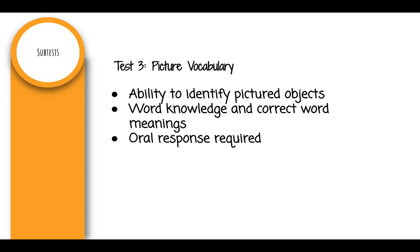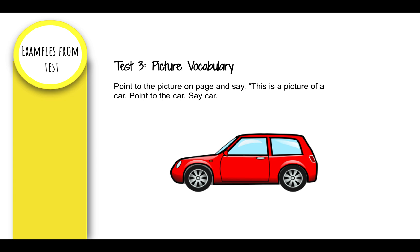Test 3: Picture Vocabulary. This subtest measures the ability to identify pictured objects, word knowledge, and correct word meanings. An oral response is required. For example, point to the picture on the page and say, 'This is a picture of a car. Point to the car.' The child will then point to the car. Then say 'car,' and they will say 'car.'